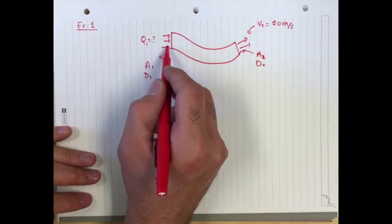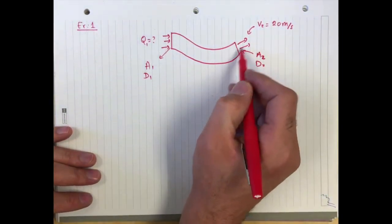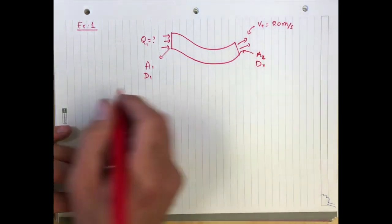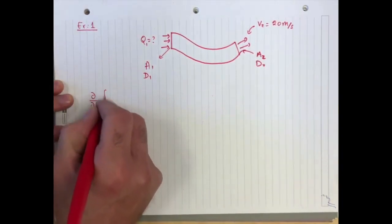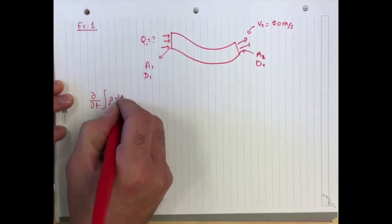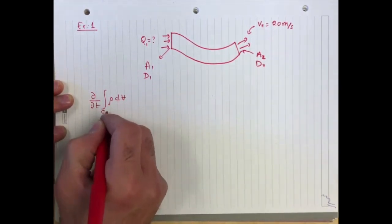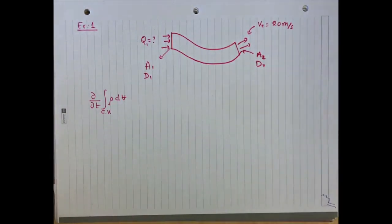We're going to assume that we have uniform velocities at the inlet, uniform velocities at the outlet, all pointing normal to the surface. So we apply mass conservation. That's d/dt of the integral of rho dv over the control volume. Well, first we haven't defined the control volume. That's a big mistake.